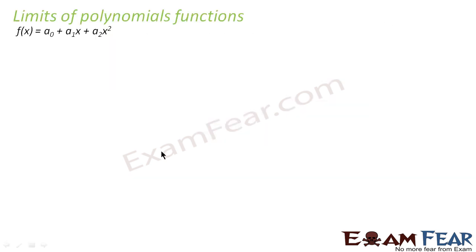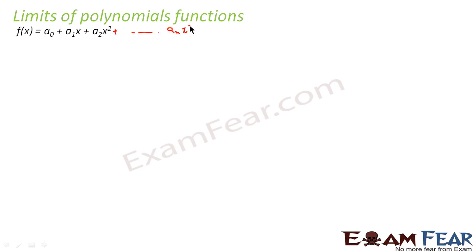Now we'll understand limits of a polynomial function. Let's suppose f(x) equals a0 plus a1·x plus a2·x² plus dot dot dot an·xⁿ. This is a polynomial function.